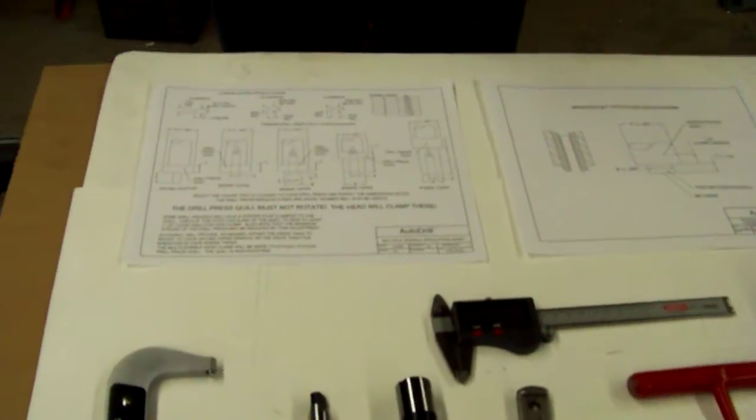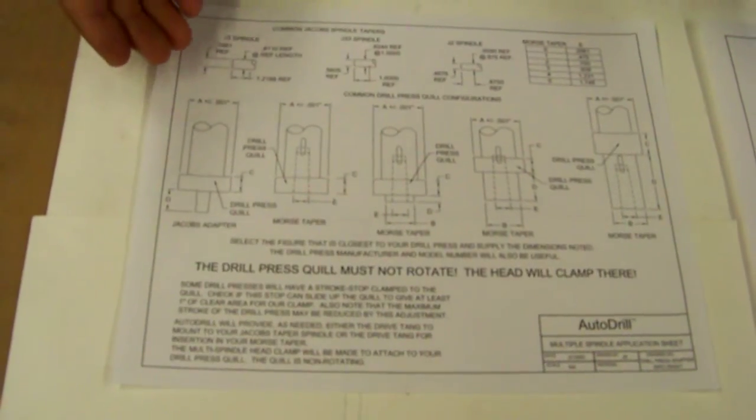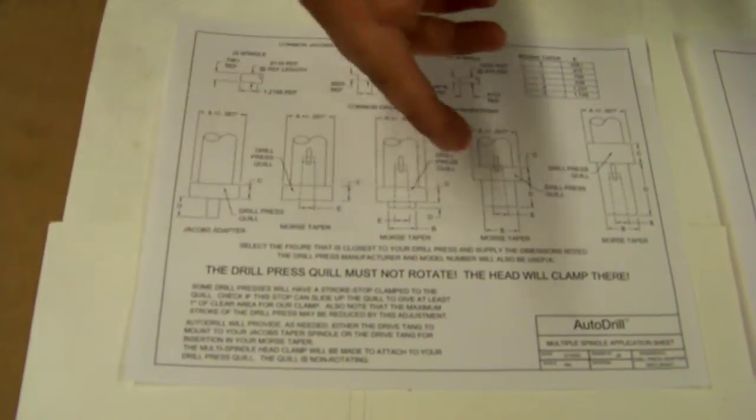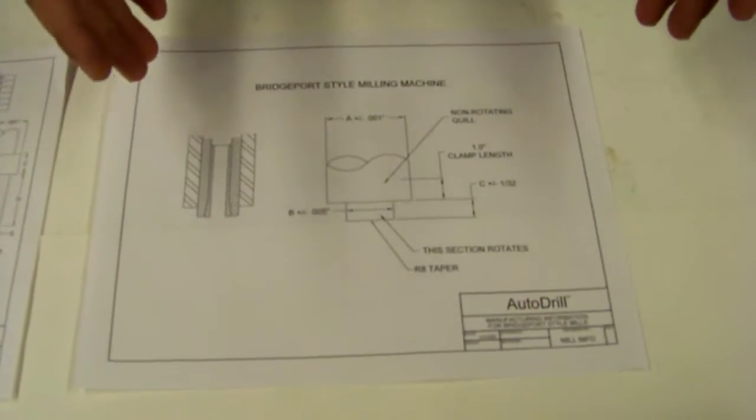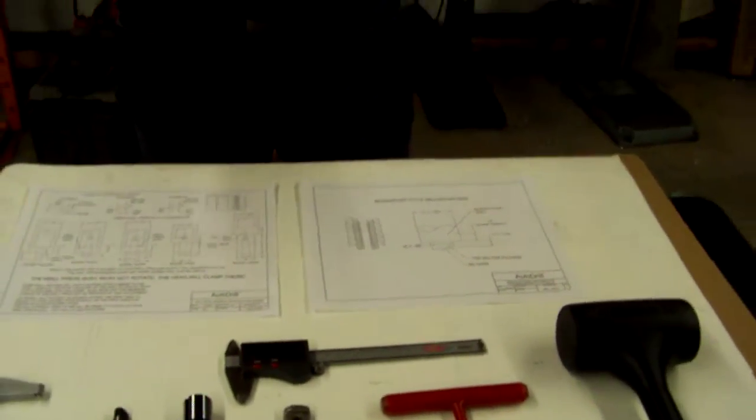When purchasing a head from Auto Drill, we'll send you one of these PDFs that will show you on a standard drill press, you might have a Jacobs taper or a Morse taper and in the event of a Bridgeport or a light type milling machine, you'll come across an RA taper. These dimensions are very important for your machine in order for the adapter to clamp on properly and that way everything works perfectly as needed.